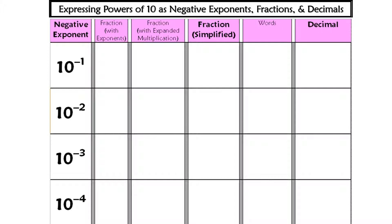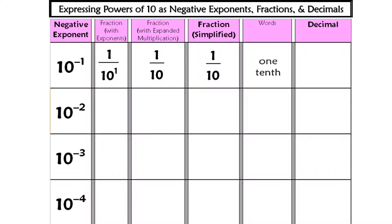So, 10 to the negative first, when we go to write that as a fraction, is just the same as 1 over 10 to the positive first. In other words, we take the negative exponent term, we put it in the denominator, we turn the exponent positive, and we make the numerator 1. When we go to rewrite that in expanded multiplication, it's just the same as saying 1 over 10. How do we say that? That's one tenth. And how do we write it as a decimal? That's 0.1.